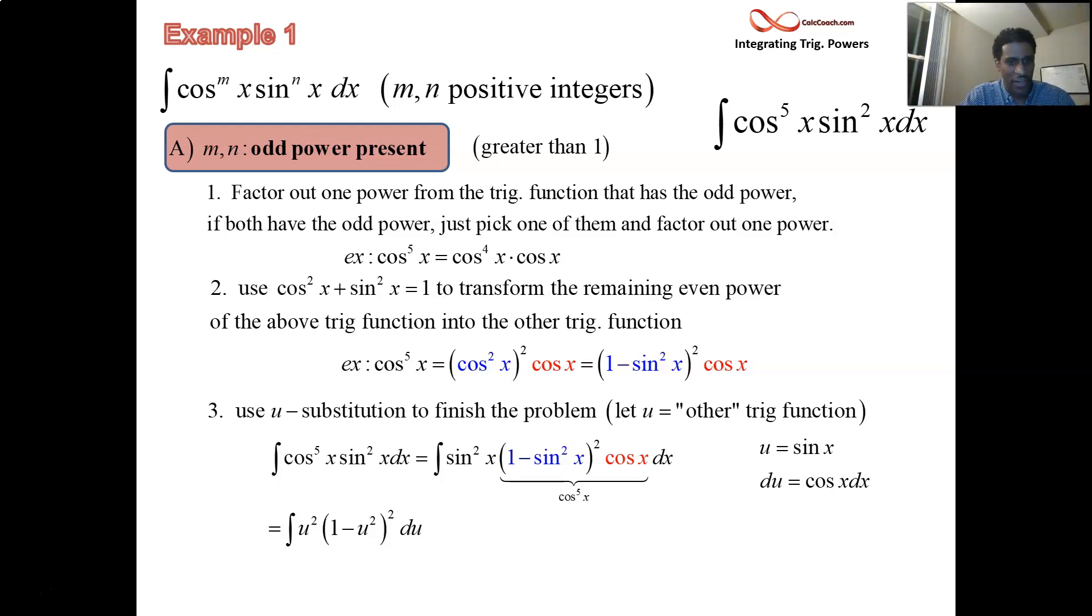And that's a nice simple integral to do. It might not look like it in its current format, but it's just a polynomial. Go ahead and square out the 1 minus u squared. Take 1 minus u squared times 1 minus u squared and FOIL that out. You'll have 1 minus 2 of those u squared plus u to the fourth.